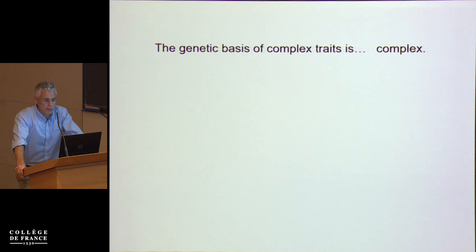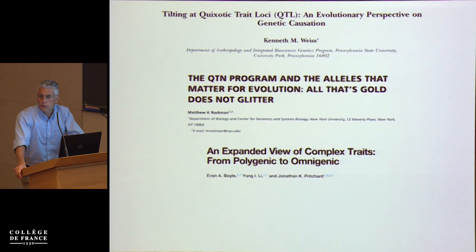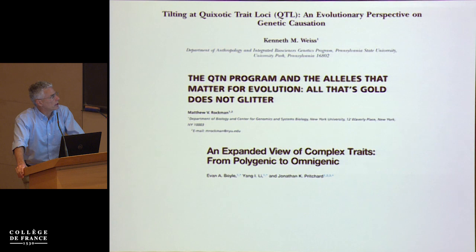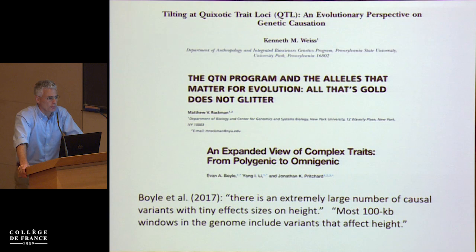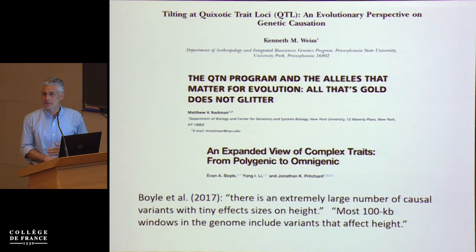These are the kinds of traits that are very common, surely adaptive, surely polygenic, but we really know much less about the genetic basis of them. That's simply because the genetic basis of complex traits is, of course, complex. A number of people have pointed this out, arguing that the total number of genes contributing must be so large it's impossible to enumerate them all. I'm sure everybody read this paper from Jonathan Pritchard's group from two years ago — there is an extremely large number of causal variants with tiny effect sizes on height; most 100 kb windows in the genome include variants that affect height.